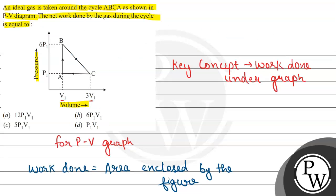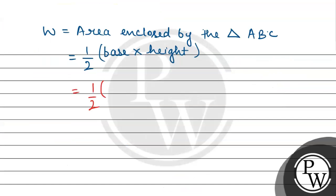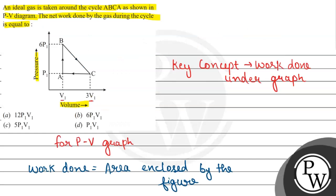So, half, when we have a volume for net A to C, then it will be 3V1 minus V1. If we do this, then we will get this base. A, C. The same way we can remove height. A, B, if we remove height, then 6P1 minus P1.